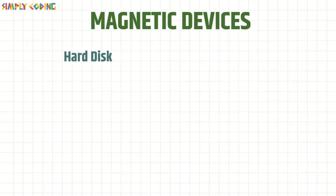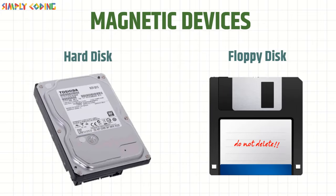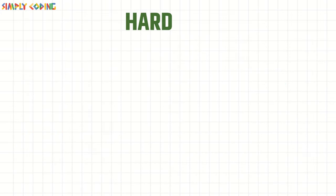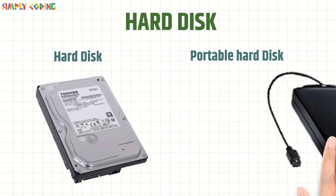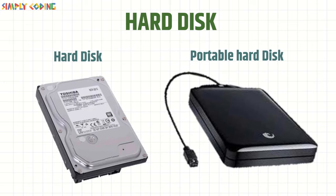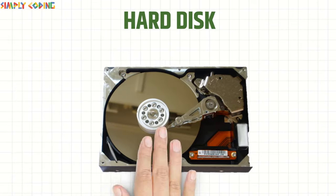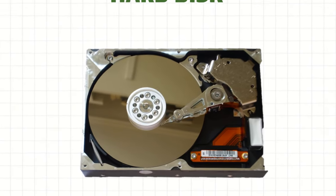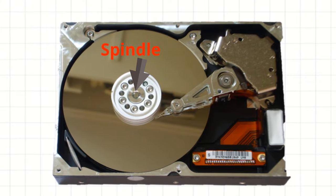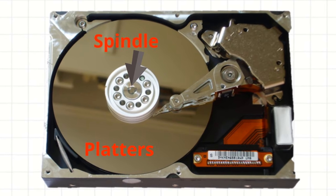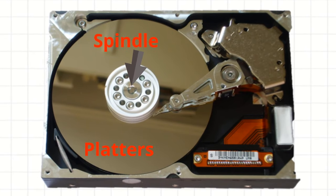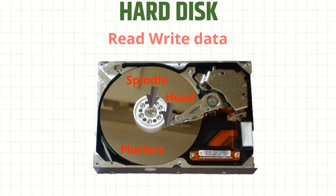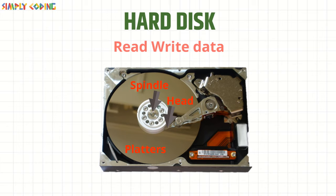Magnetic storage devices include hard disk and floppy disk. Hard disks are typically installed inside the computer, though portable hard disks are also available. Inside a hard disk, there is a spindle which holds one or more rotating disks called platters. These disks are coated with magnetic material and have a magnetic head, which is used to read or write data on the disk.